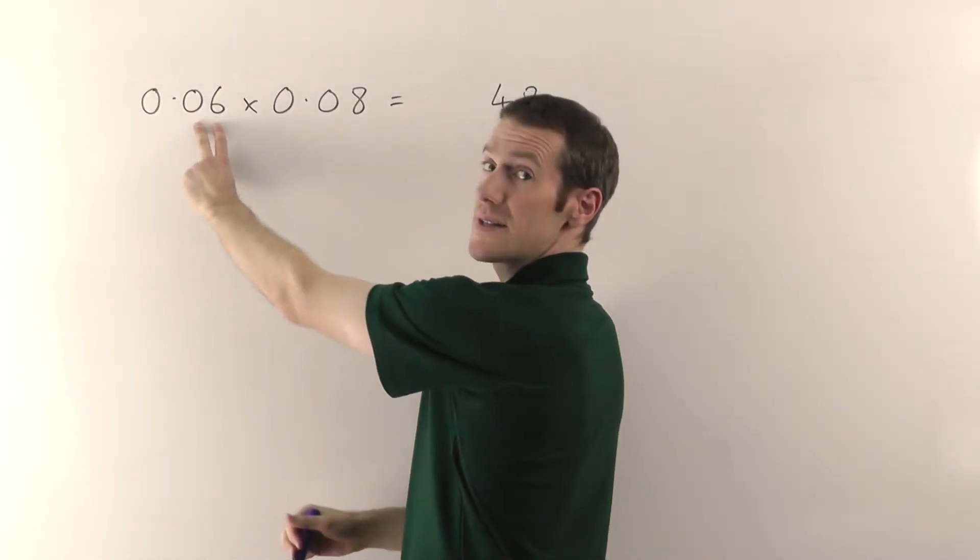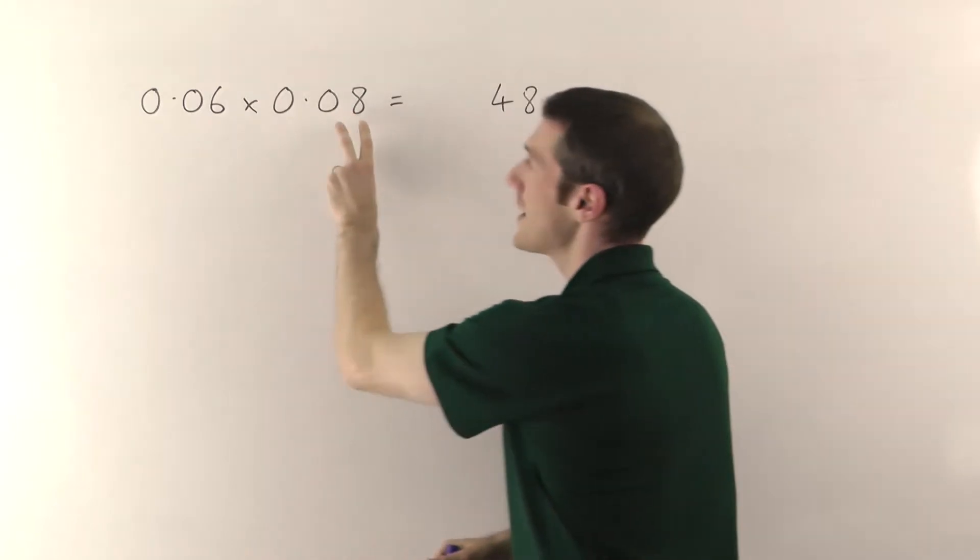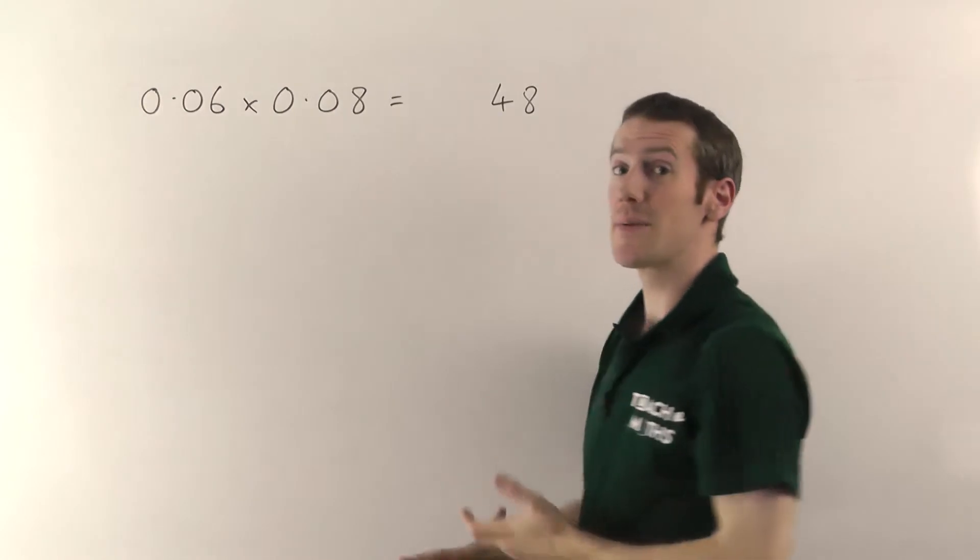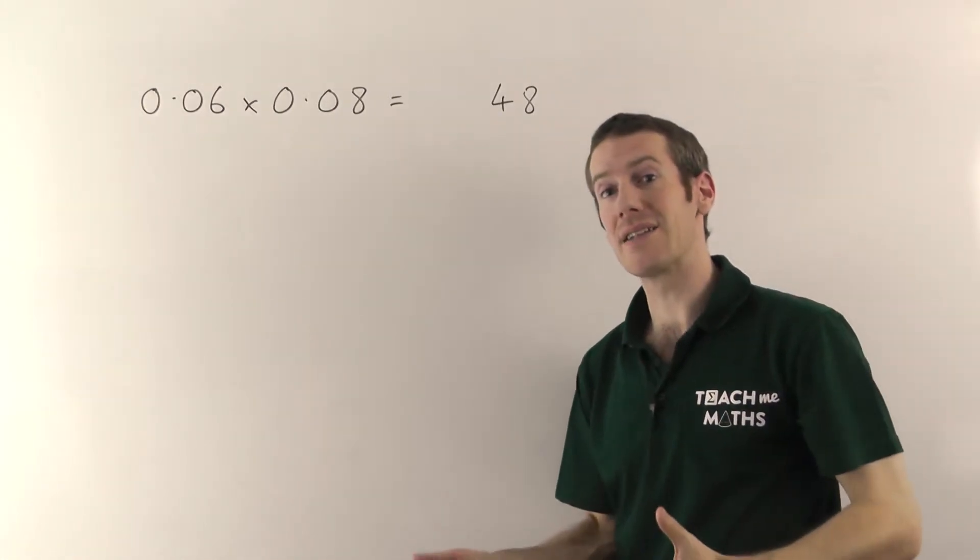I've got 2 decimal places here, 1, 2, and 2 decimal places here, 1, 2. So altogether I've got 4 decimal places, that means I need 4 decimal places in the answer as well.